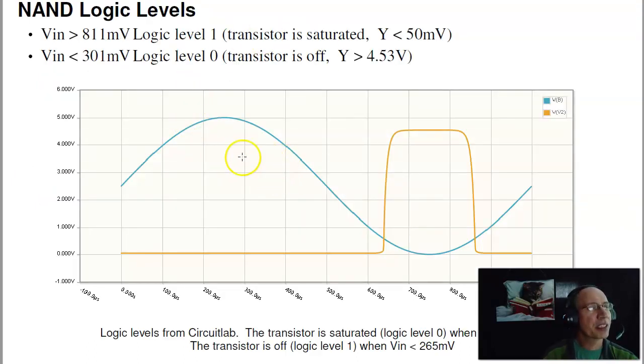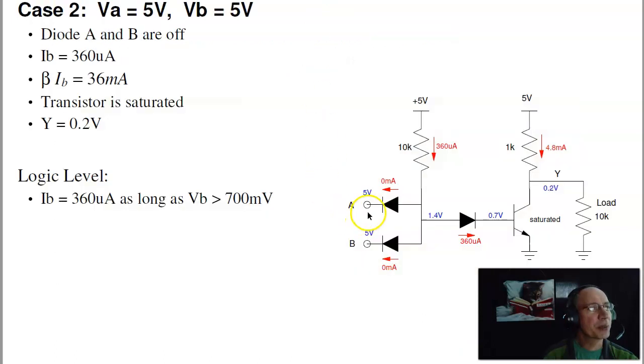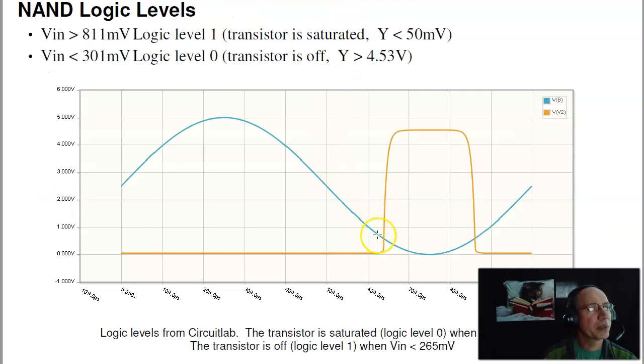In CircuitLab, you can test it. Again, take the input and have it sweep up and down. And what you see is that if the voltage stays above 811 millivolts the transistor saturated, if it droops below 301 millivolts, it turns off. So, those are actually the logic levels found experimentally. Again, diodes are not ideal, so likewise the previous analysis is a little bit off.